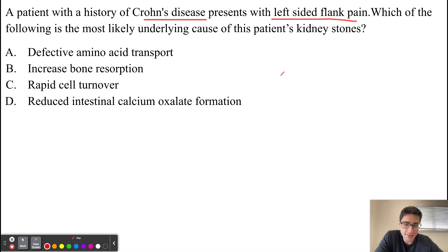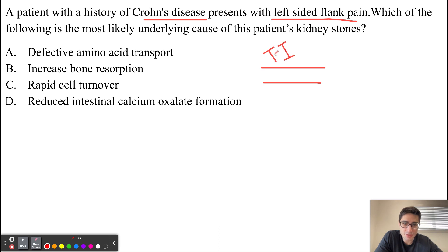Crohn's disease causes inflammation in the bowel and most commonly affects the terminal ileum. The terminal ileum is the site in the small intestine responsible for reabsorbing bile acids — I'll write BA for bile acids and TI for terminal ileum.